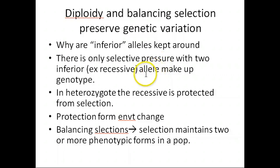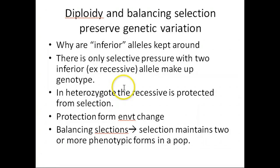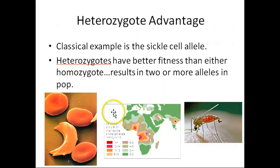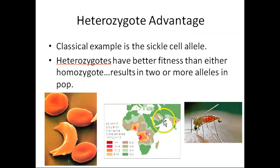Regarding diploidy: natural selection selects for the best-suited alleles, but so-called inferior recessive alleles are protected from selection in a heterozygous state — they'd only be selected against if homozygous recessive. This is balancing selection, where two or more phenotypes persist because two or more alleles are maintained. The classic example is malaria: being a heterozygote — carrying one sickle-cell allele — is protective. That's a heterozygote advantage, and you should be able to explain why from the video we watched.